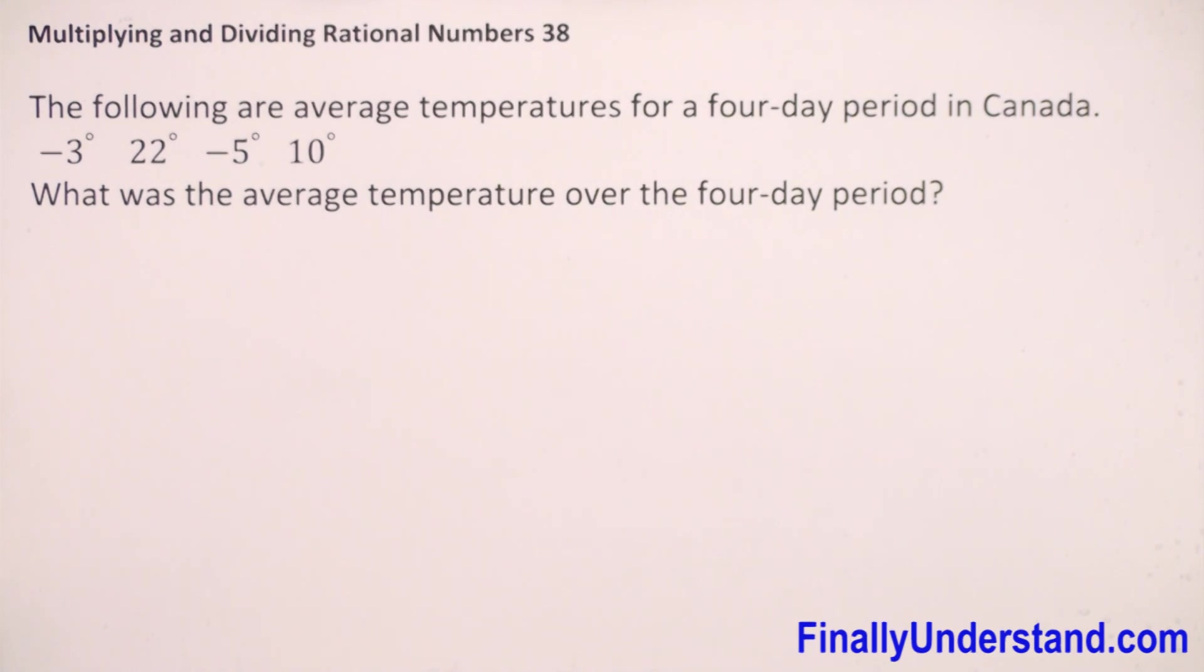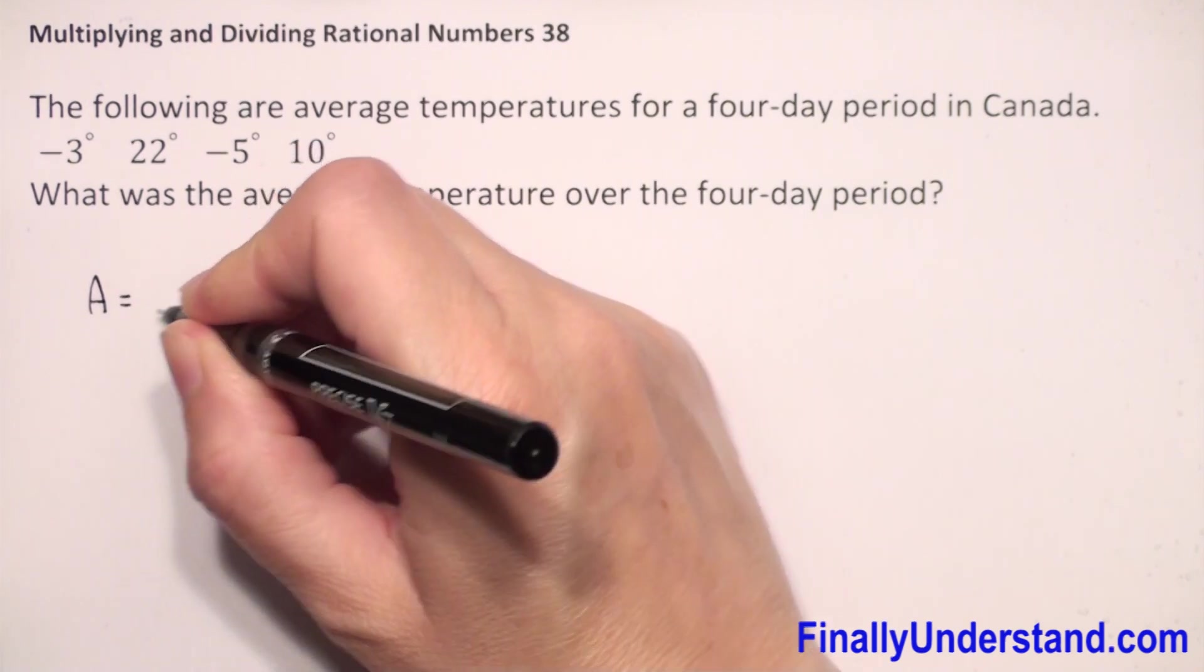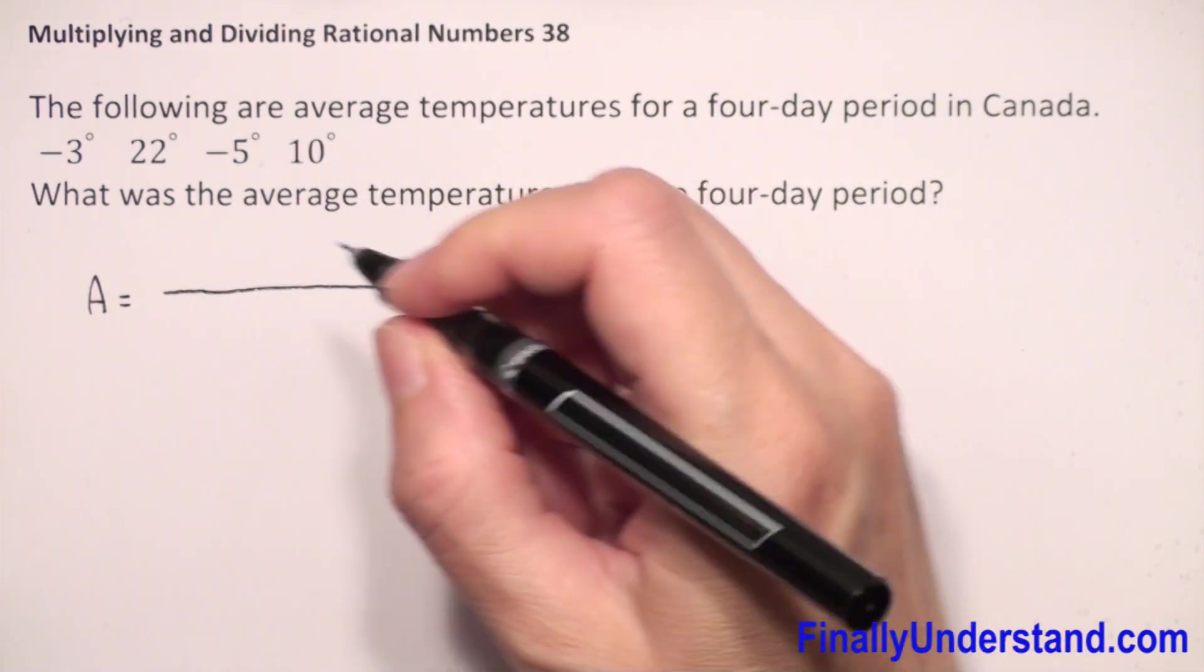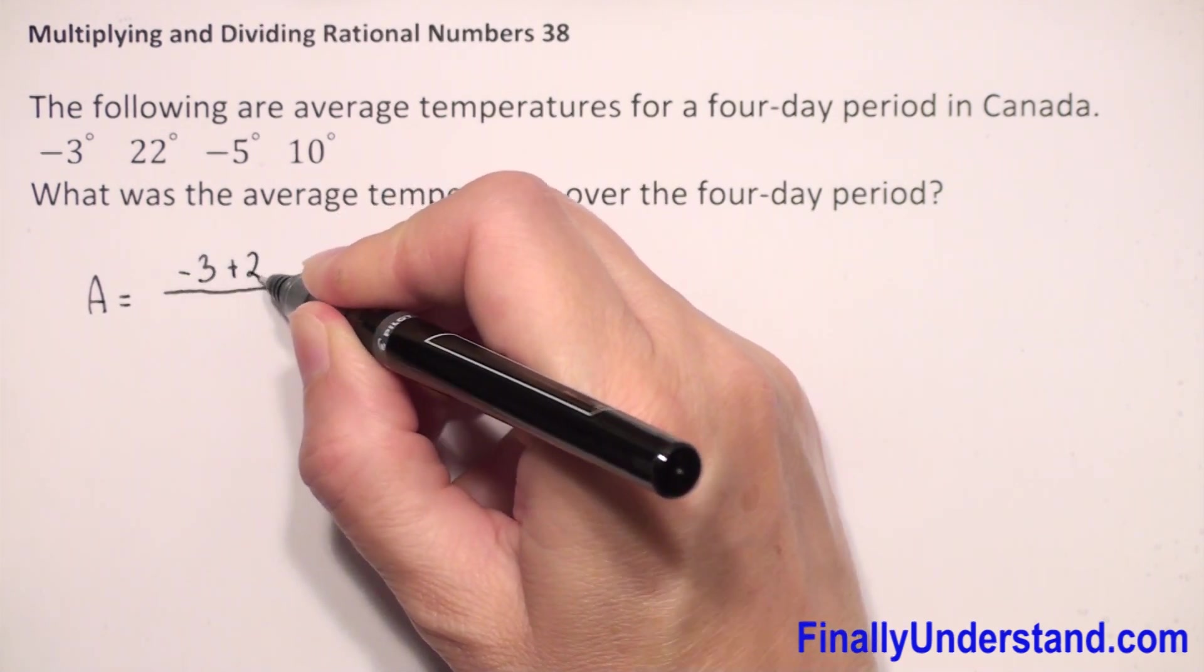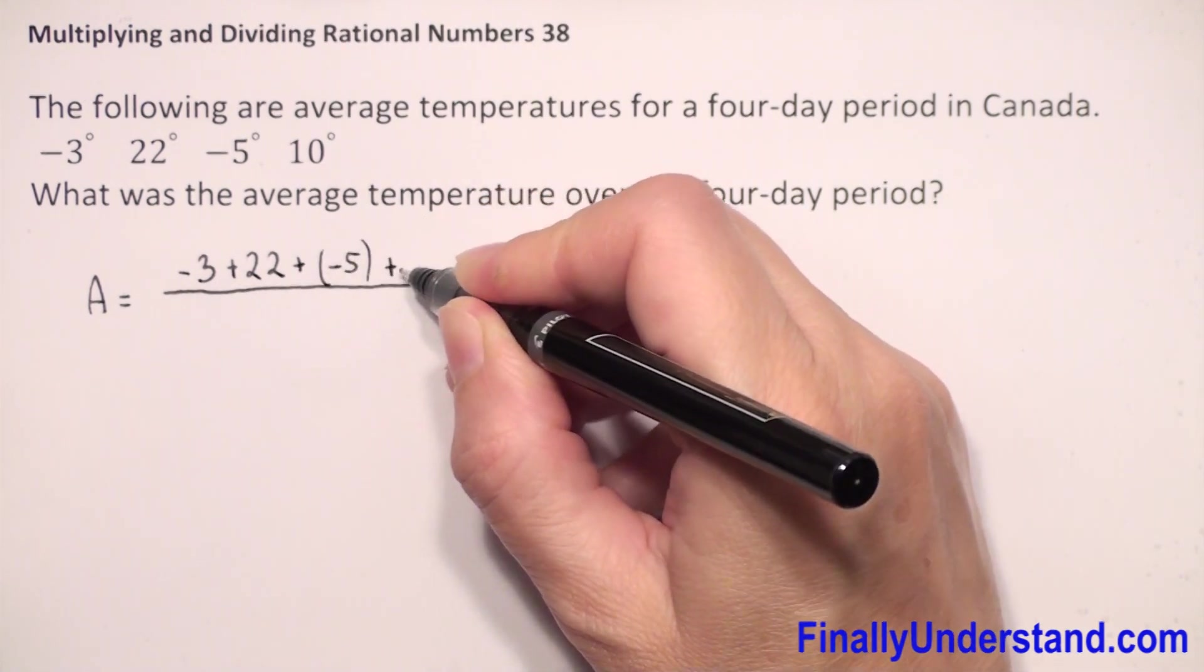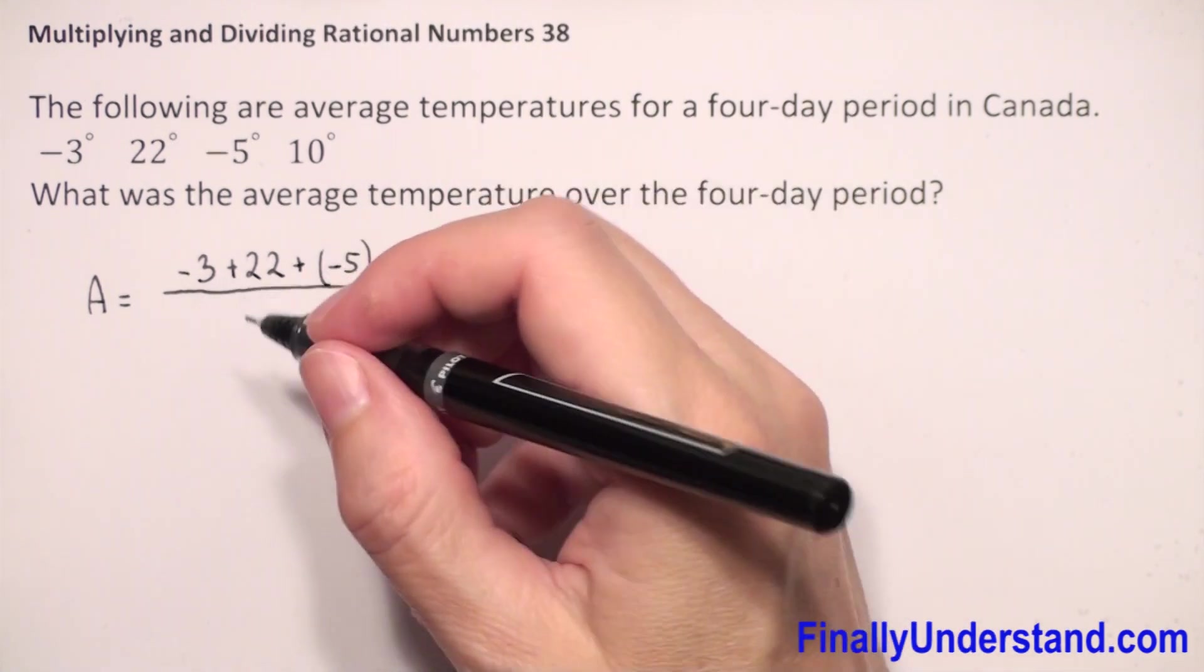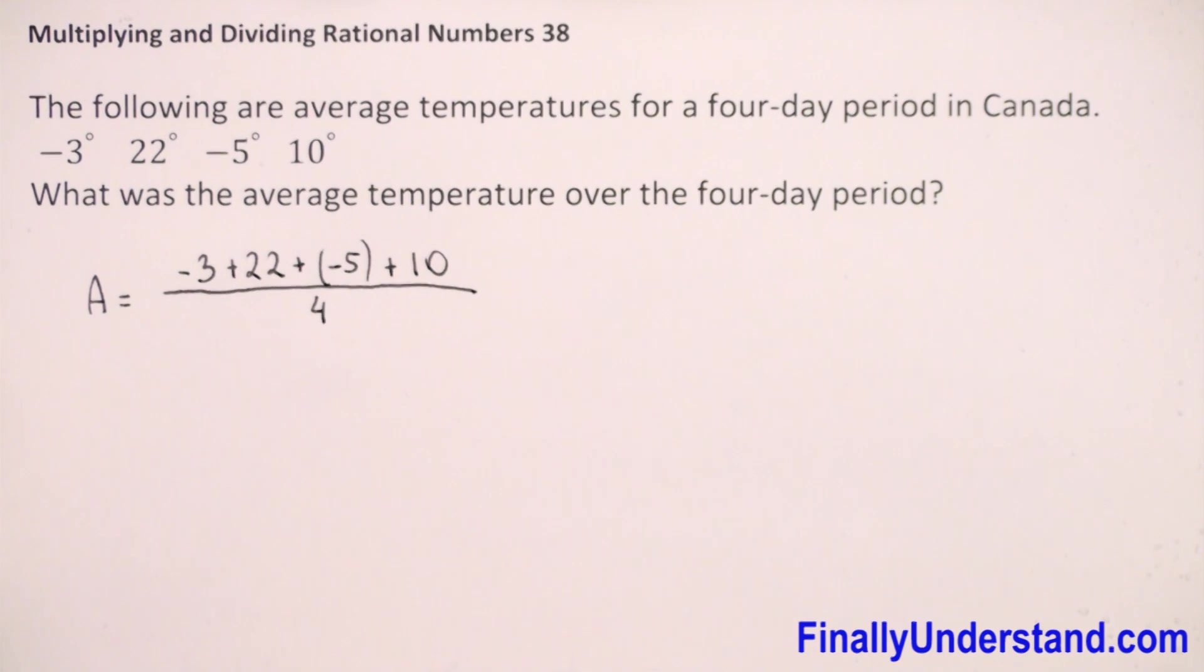So to find the average of four numbers, we first add these four numbers, then divide the sum by four because we have four numbers. We have to add these four numbers: negative 3 plus 22 plus negative 5 plus 10. And we have to divide the sum by four because we have four results.